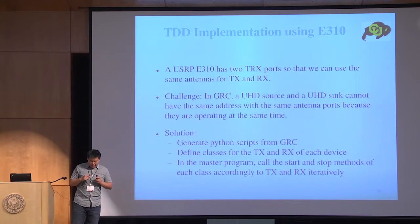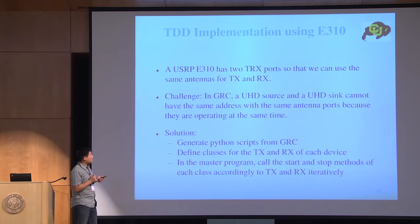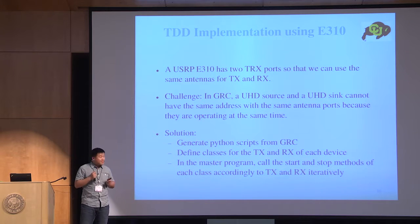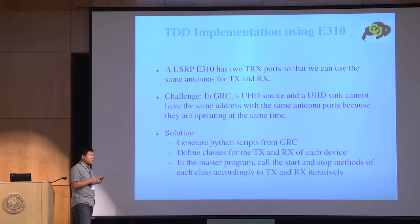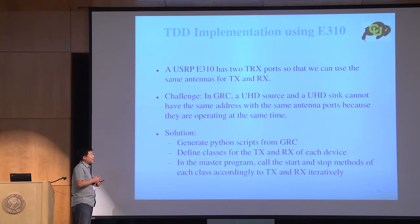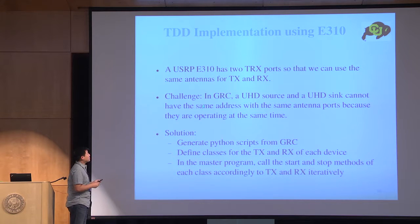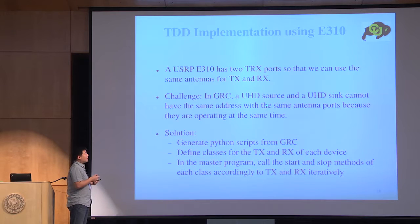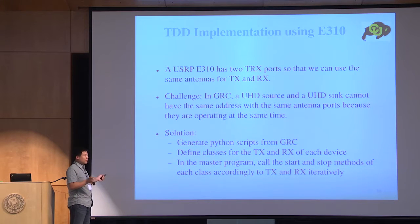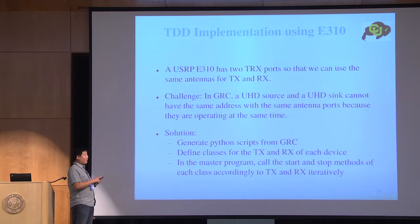The second thing is how to implement TDD using the E310. We chose the E310 because it has two TRX ports that can be used for both transmission and reception. We need to maintain channel reciprocity, but we realized we cannot set the UHD source and UHD sink blocks with the same address and the same antenna ports. When we try that, the UHD source automatically switches to the RX ports rather than the TRX ports, so we cannot use GNU Radio Companion directly for this purpose.